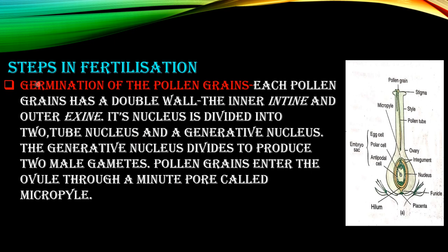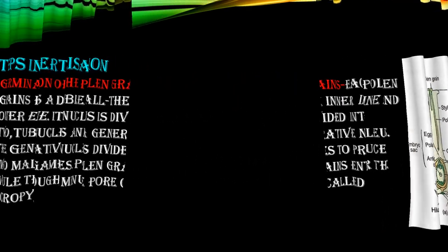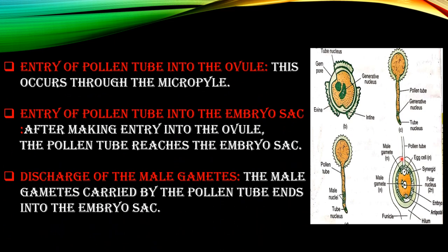There are some steps in fertilization. First is germination of the pollen grain. Each pollen grain received by the stigma first germinates — each pollen grain has a double wall. The outer wall is called the exine and the inner wall is called the intine. The enzyme splits the exine, and the intine protrudes out. This intine carries two nuclei: one is the tube nucleus and the other is the generative nucleus, and it carries the male gametes along with it.